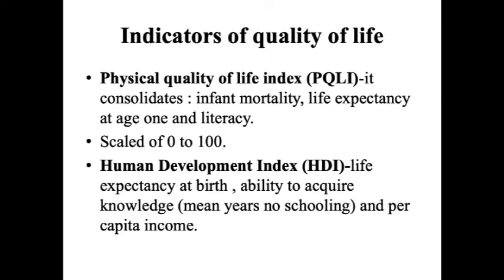Quality of life indicators include the Physical Quality of Life Index (PQLI), which measures infant mortality, life expectancy at age 1, and literacy, scaled from 0 to 100. Another is the Human Development Index (HDI), which includes life expectancy at birth, ability to acquire knowledge (mean years of schooling), and per capita income.